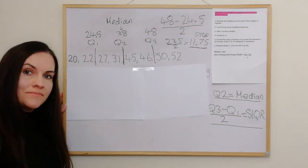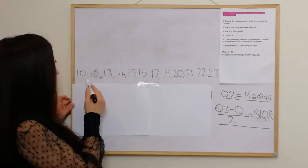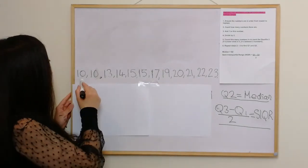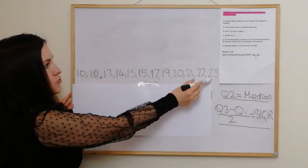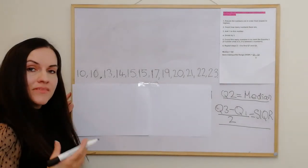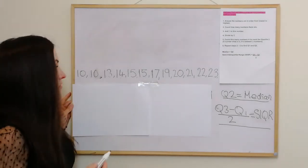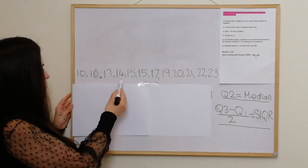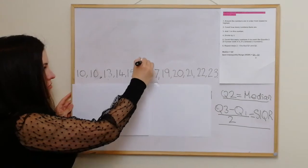In our third example, we go through the same process. Everything's in order — we count the number of numbers: 1, 2, 3, 4, 5, 6, 7, 8, 9, 10, 11, 12. We add one to get 13, then divide 13 by 2, which is 6.5. So we count in 1, 2, 3, 4, 5, 6 — and since it's 0.5, it's between two numbers. So this is Q2.